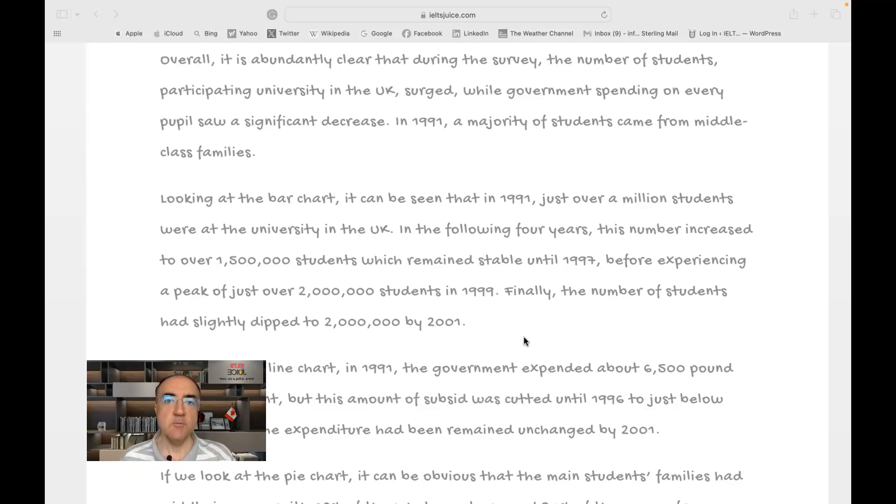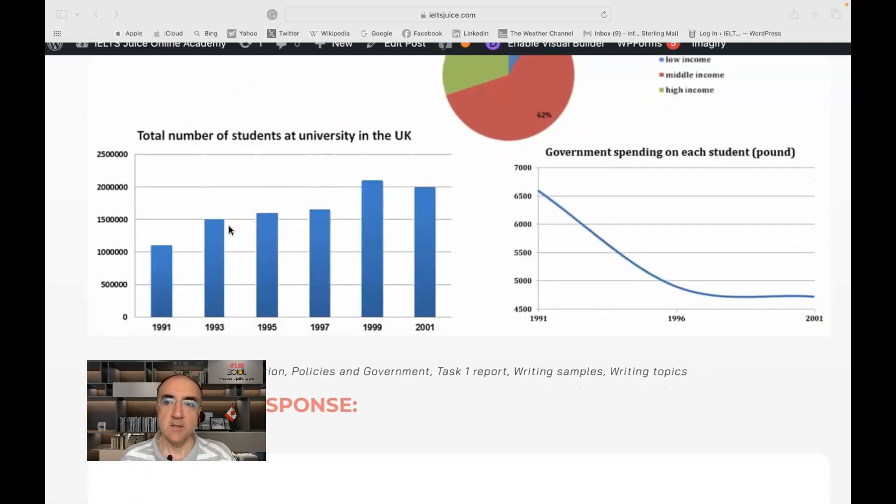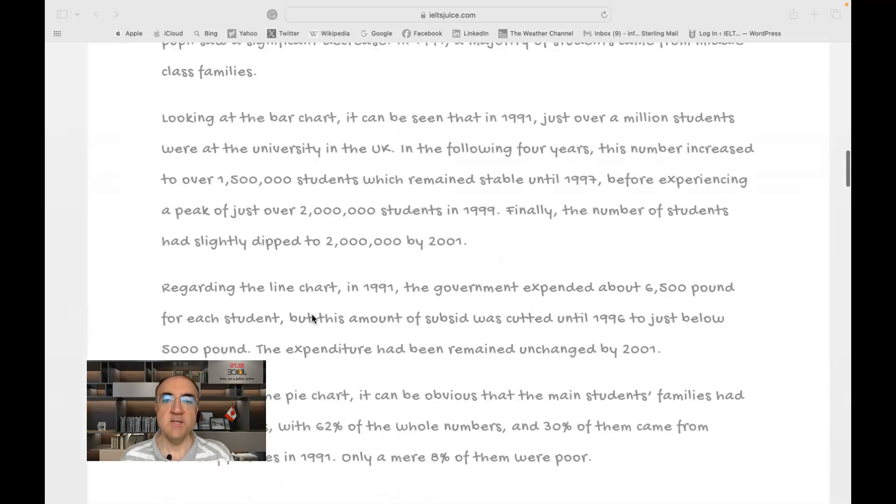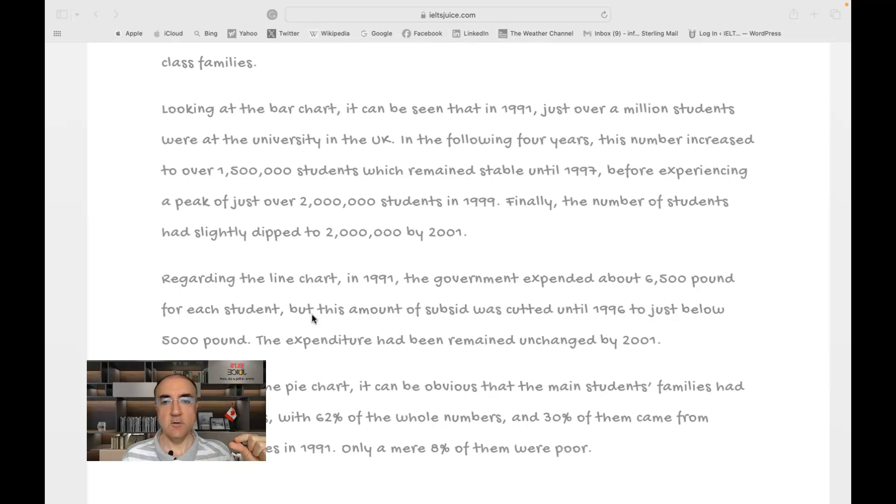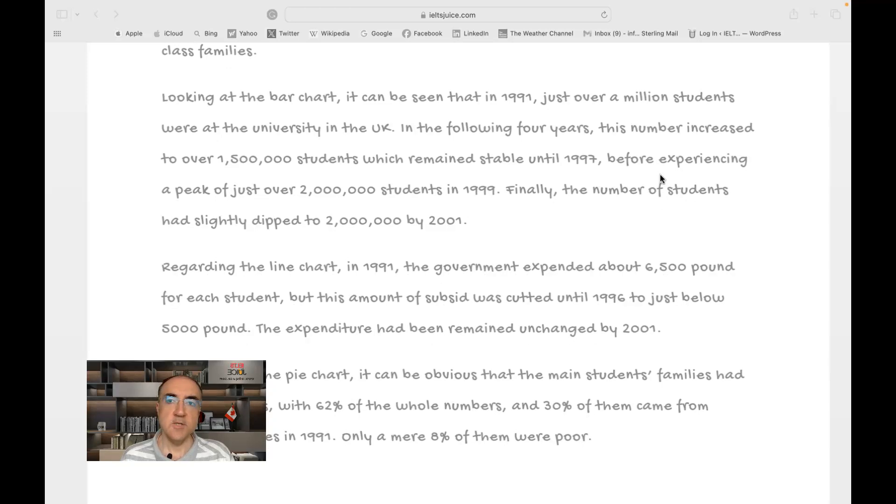The number remained stable, remained relatively stable. So again, it's not wrong, but as you can see, the data is not reported with maximum accuracy. You can check that 1,500,000, it hovered a bit. So it did not remain stable, but still, you could say it remained in a certain level, like between 1.5 million and 1.6 million, for instance. Before experiencing a peak of just over 2 million students in 1999. Finally, I really like this transition.